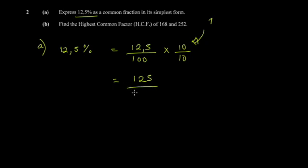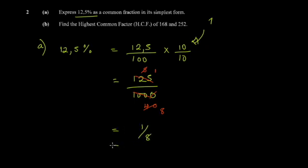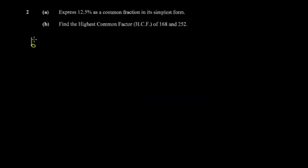To get a common fraction, eliminate the decimal by multiplying by 10 over 10 — which equals one, so you're not changing the value. You get 125 over 1000. Now simplify: dividing by 25 gives 5 over 40, then dividing by 5 gives one over eight. So the answer is one over eight.